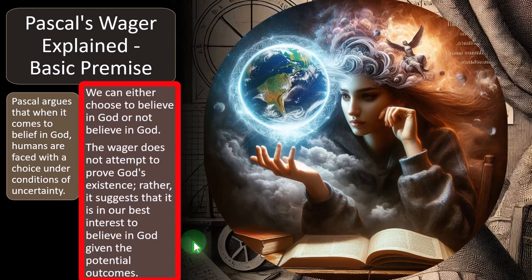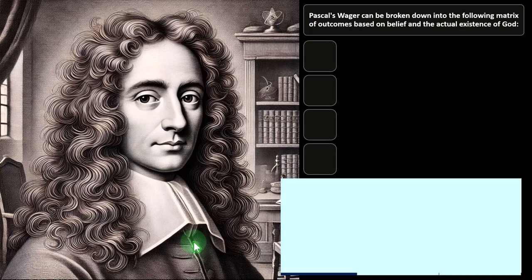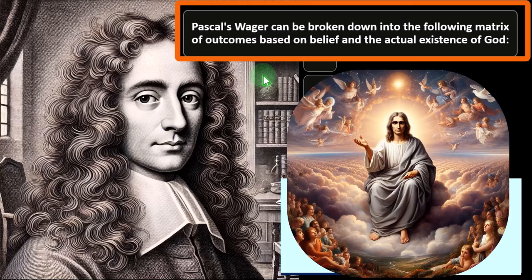The wager does not attempt to prove God's existence. Rather, it suggests that it is in our best interest to believe in God, given the potential outcomes. He's not trying to present this as proof of God. You can't really prove something about the immaterial with scientific proofs of the material world — at least we don't have any concept of how to do that thus far. Therefore, we're left with this uncertainty. Pascal's wager can be broken down into a matrix of outcomes based on belief and the actual existence of God — the same logic we apply when thinking about expected value.